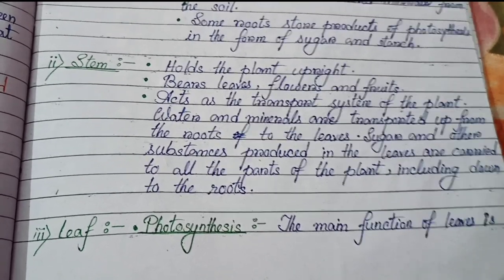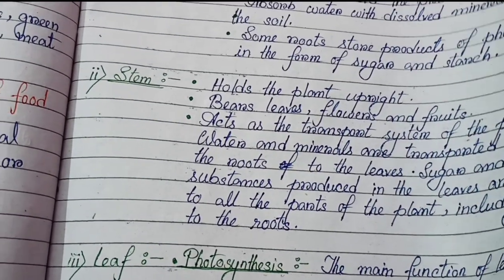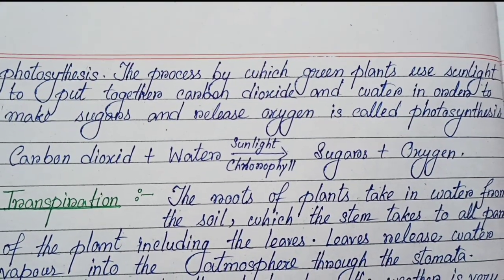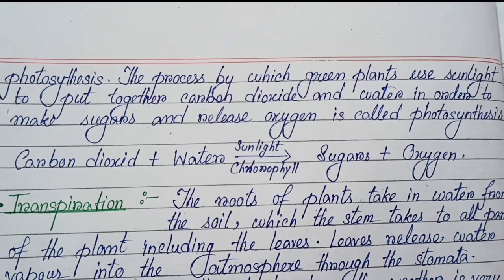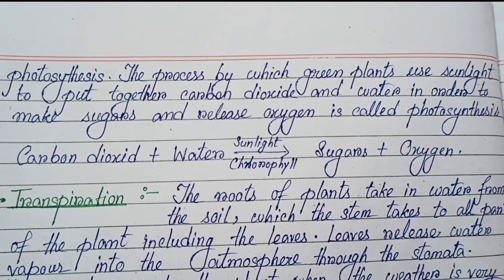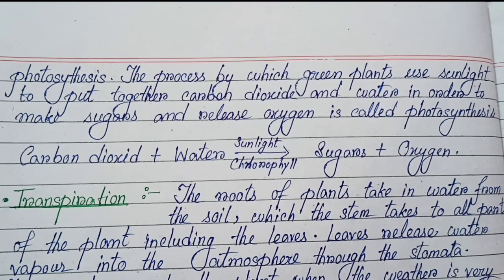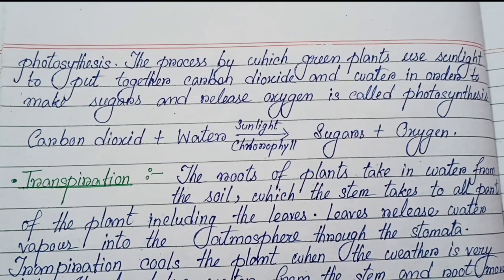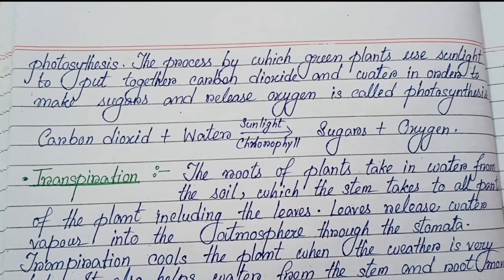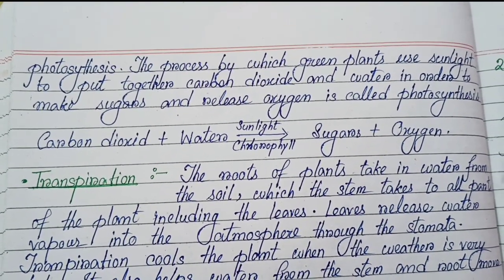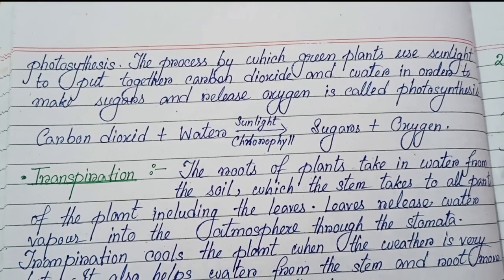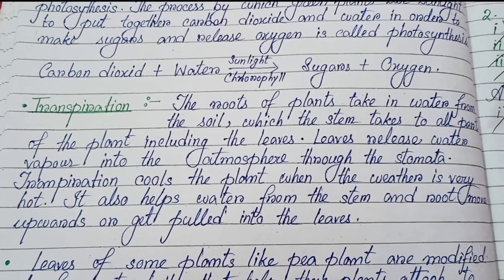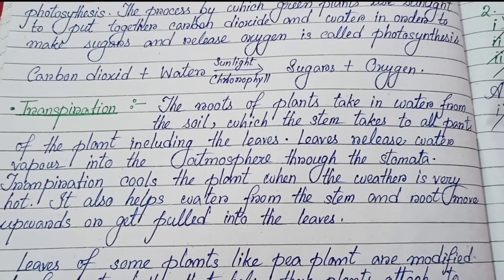Leaf functions: first, photosynthesis — the main function of leaves is photosynthesis, the process by which green plants use sunlight to put together carbon dioxide and water in order to make sugars and release oxygen. The equation is: carbon dioxide + water, with sunlight and chlorophyll, produces sugar + oxygen.